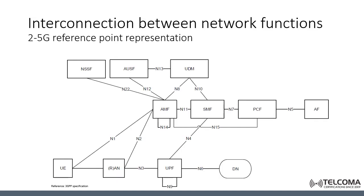On the other hand, there is another way for defining the interconnection between network functions, which is the reference point representation. This approach focuses on the interactions between pairs of network functions, defined by point-to-point reference points between any two network functions — for example the SMF and the PCF. Between the PCF and SMF we have N7, and between the SMF and UDM we have N10.